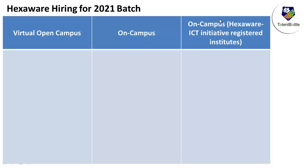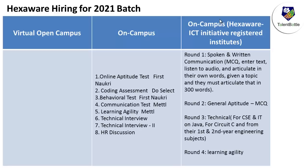These are the three particular ways Hexaware is hiring the 2021 batch. The process has around eight to nine rounds: the first round is the online aptitude test, then coding assessment, behavioral test, communication test, learning agility, technical interview one, technical interview two, and HR discussion. This is basically the on-campus process, and they are using multiple platforms like firstnockery and DoSelect for coding assessment.